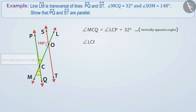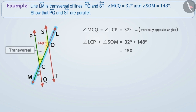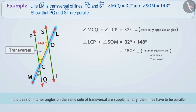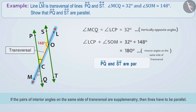Angle LCP and angle SOM are the interior angles on the same side of the transversal lines. If we add them, we get angle LCP plus angle SOM is equal to 32 degrees plus 148 degrees, which equals 180 degrees. If the pairs of interior angles on the same side of the transversal are supplementary, then the lines have to be parallel. If a transversal line cuts two lines such that the pair of interior angles on the same side are supplementary, then those lines are parallel. This makes it clear that line PQ and line ST are parallel.